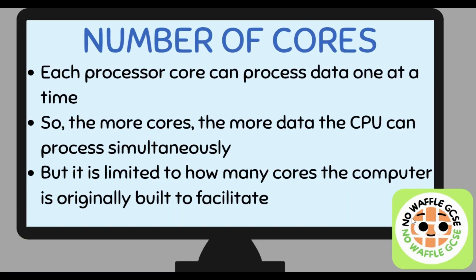Number of cores. Each processor core can process data one at a time. So if you have a single processor core, you're processing one instruction at a time. Therefore, the more cores a computer has, the more data the CPU can process simultaneously — at the same time. But just like clock speed, it is limited by how many cores the computer is originally built to facilitate. If you're trying to get a quad-core processor used in a computer which can only facilitate dual-core, then it will only run at dual-core and you would have practically wasted your money.